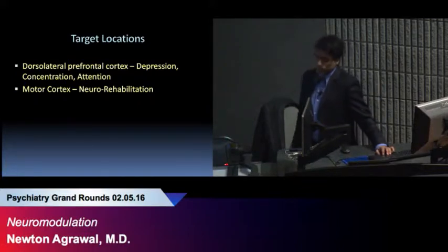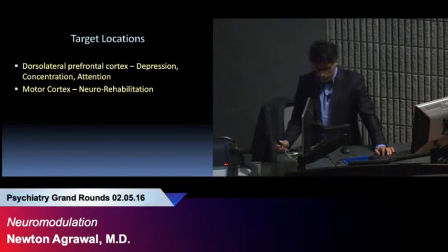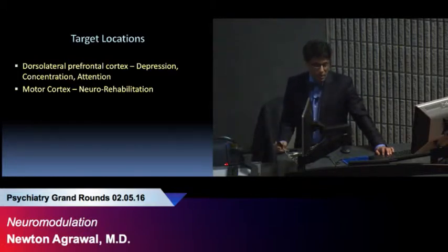It turns out that TDCS offers this unique property to be able to do both at the same time, which is a unique advantage over RTMS, which only does one modality on one side at one time. There's different target locations for targeting the particular therapy or condition that you want. For depression, we often will choose the dorsolateral prefrontal cortex, and for rehabilitation post-stroke, you can target the motor cortex.